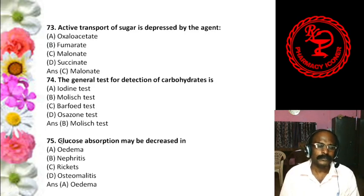Question 65: Synovial fluid contains — Heparin, Hyaluronic acid, Chondroitin sulfate, or Keratan sulfate. The answer is B, hyaluronic acid. Question 66: The highest concentration of fructose is found in — Aqueous humor, Vitreous humor, Synovial fluid, or Seminal fluid. The answer is seminal fluid — seminal fluid contains the highest concentration of fructose.